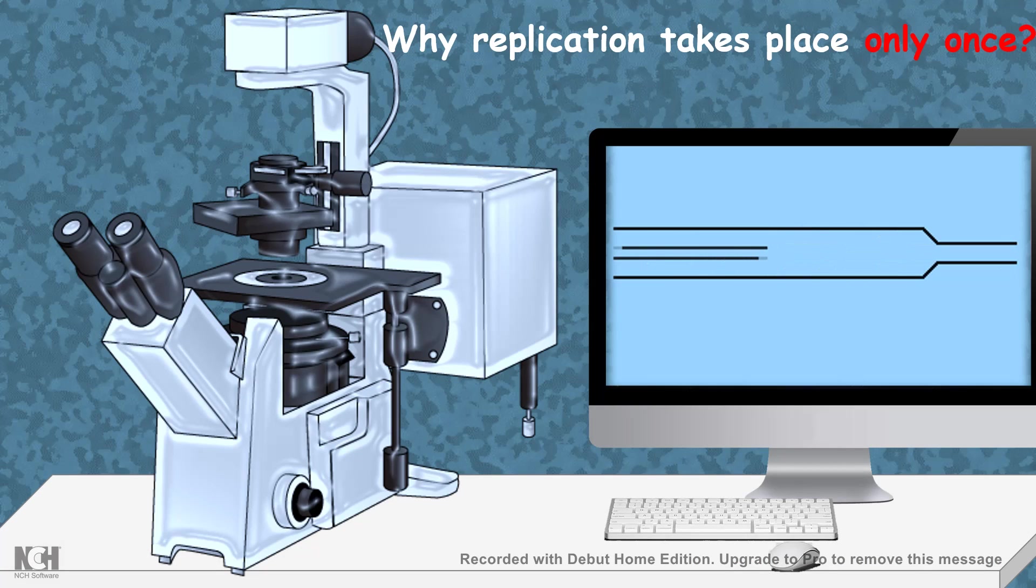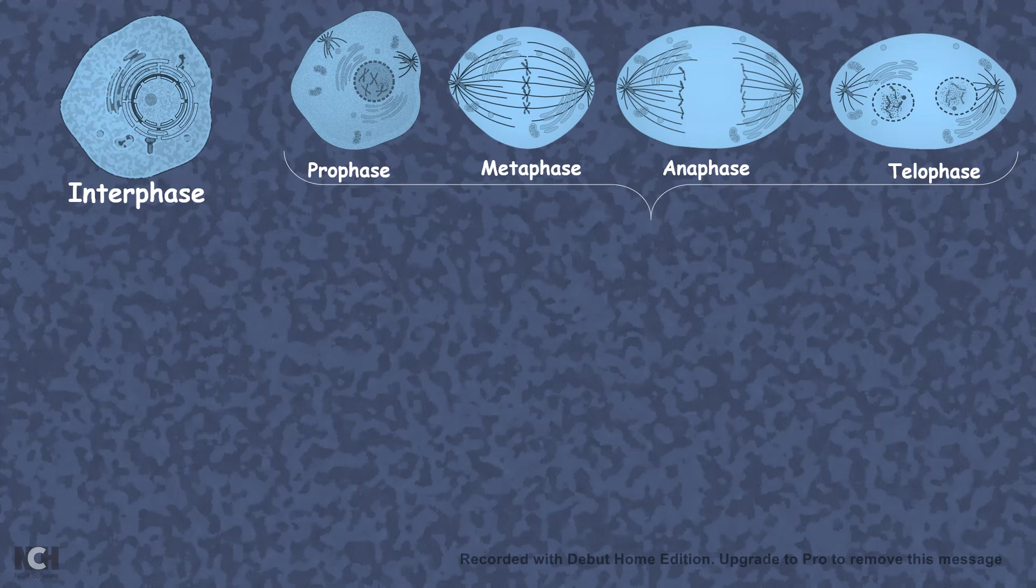This question was bothering scientists for about 20 years, why replication takes place only once during the cell cycle. What people thought was that the components which are allowing the replication to happen, such as the origin of replication complex, are only present in the S phase, not any other phase.